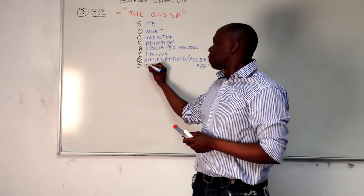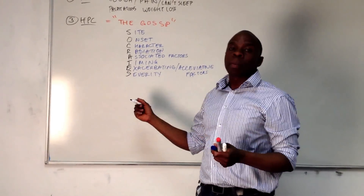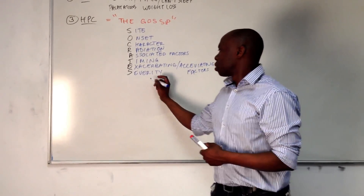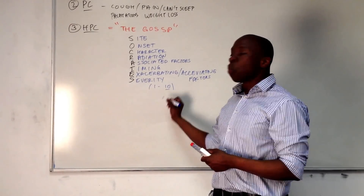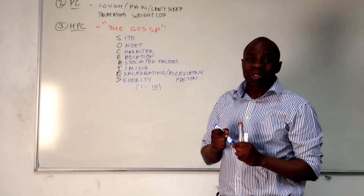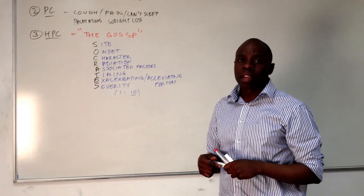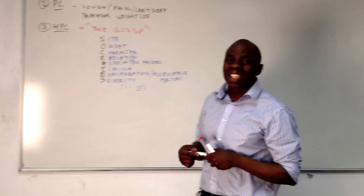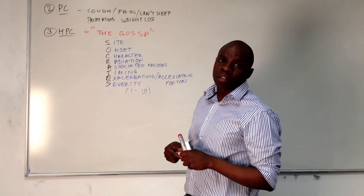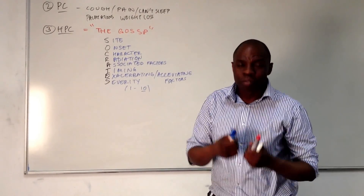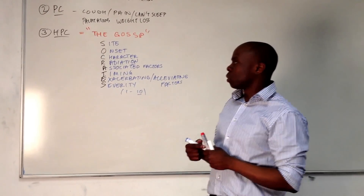The last one in SOCRATES is S for severity — how bad the pain is. Normally we give a scale of one to ten, ten being the worst pain they've ever had in their life. Make sure they're scoring against the worst pain they've ever experienced. Some people will say eleven, and you just have to make sure they keep it between one and ten.